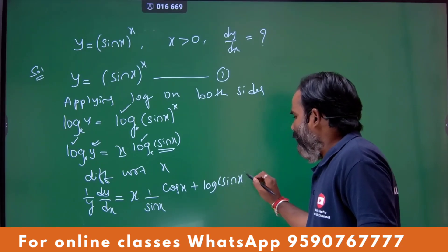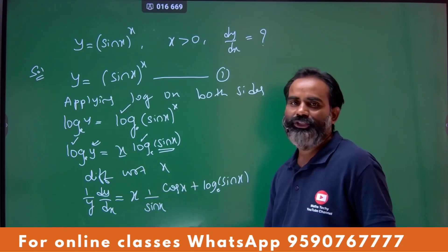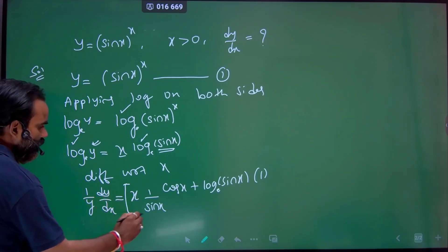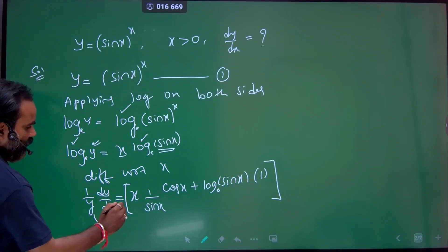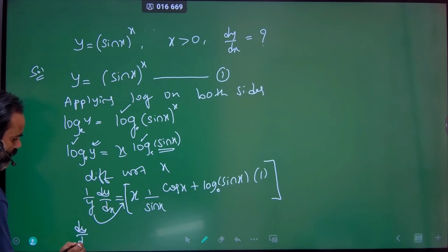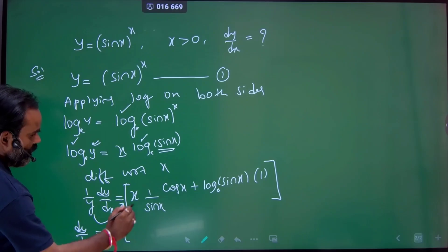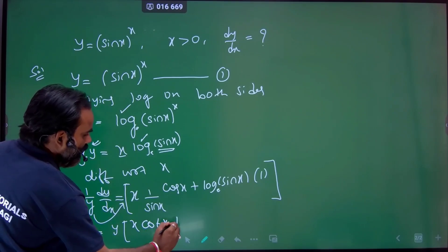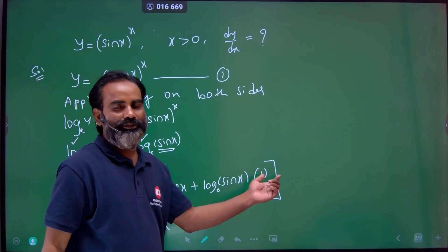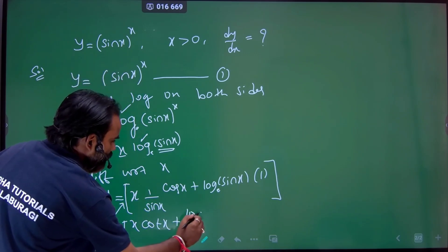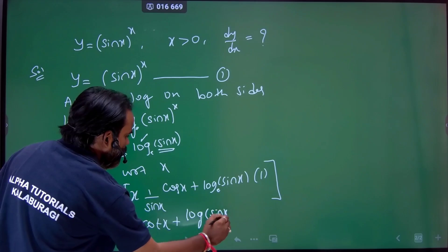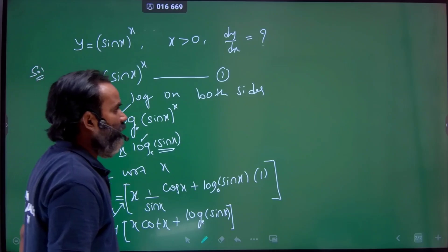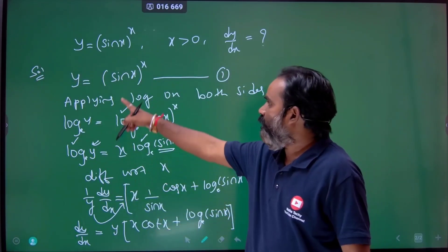First function as it is, differentiation of second function, plus second function as it is, differentiation of first. Differentiation of x is 1. What is the differentiation of log sin x? That is 1 by sin x times cos x, which gives cot x. So dy by dx equals y times x times cot x plus log sin x.